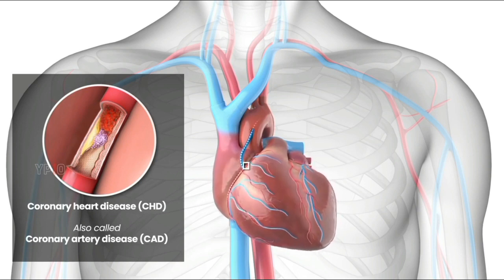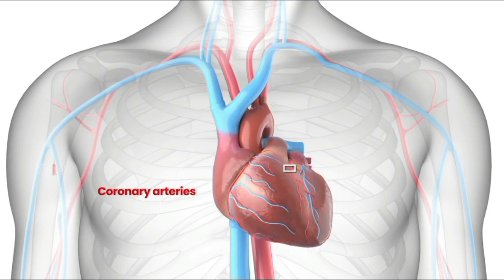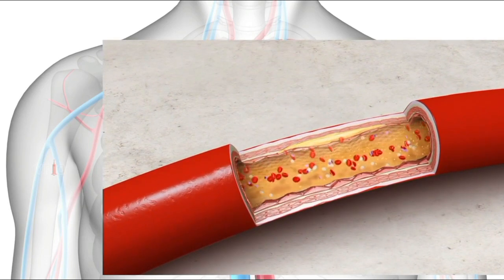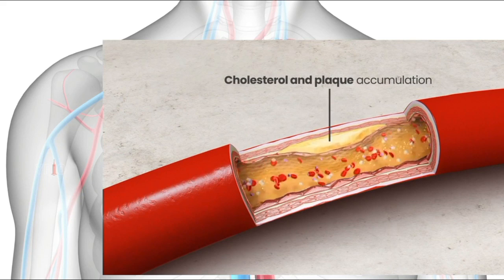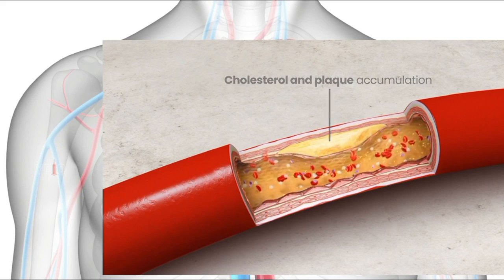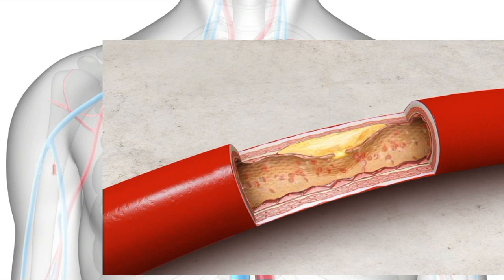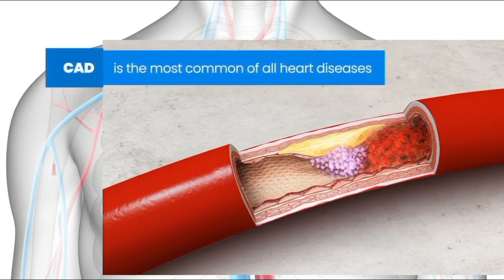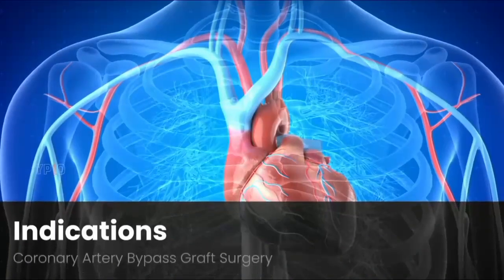CABG is used for people who have severe coronary heart disease (CHD), also called coronary artery disease (CAD). CAD usually occurs when cholesterol and plaque accumulate inside the coronary arteries, blocking the flow of oxygen-rich blood to the heart muscles. The plaque can sometimes break off and form a blood clot that can completely block the vessels, leading to permanent heart damage. CAD is the most common of all heart diseases and a leading cause of death in both men and women.